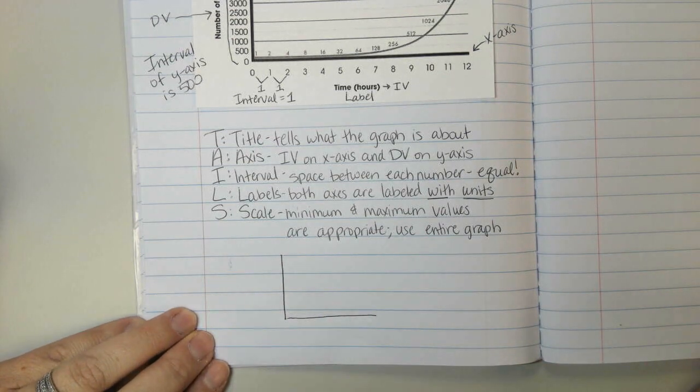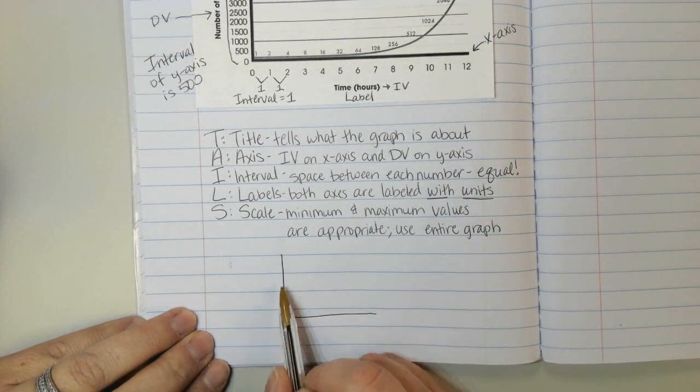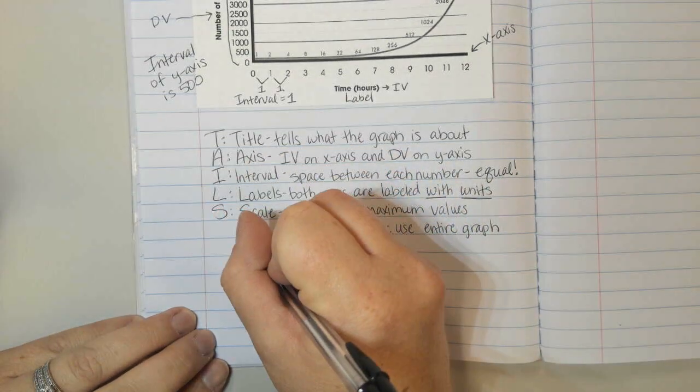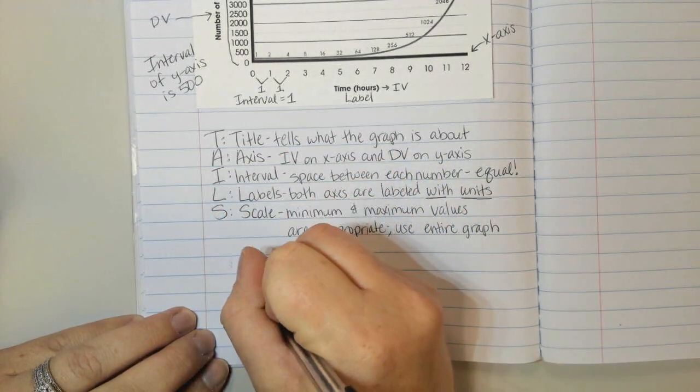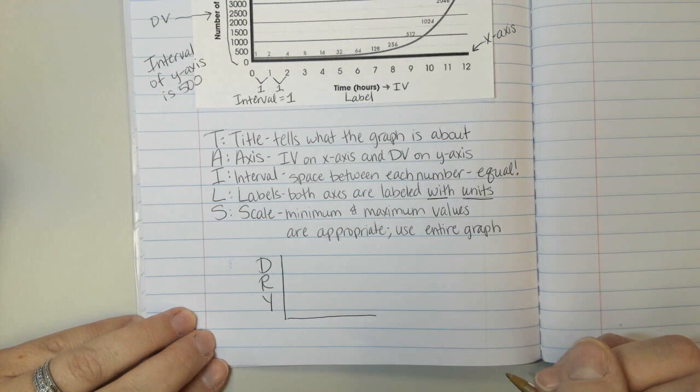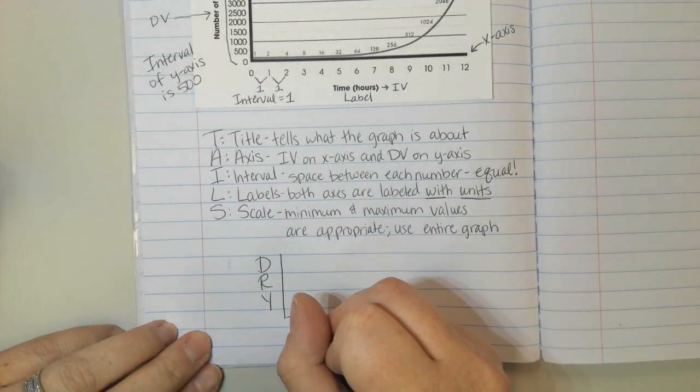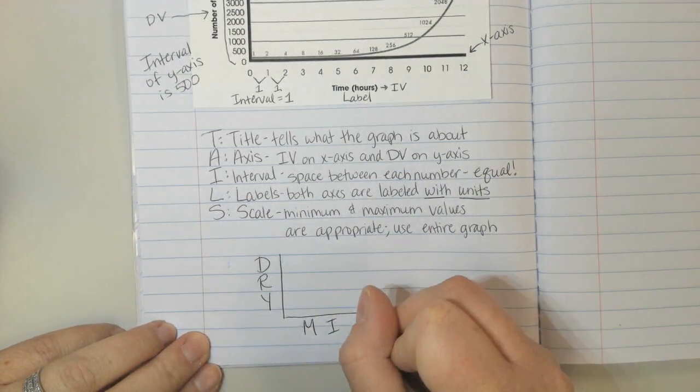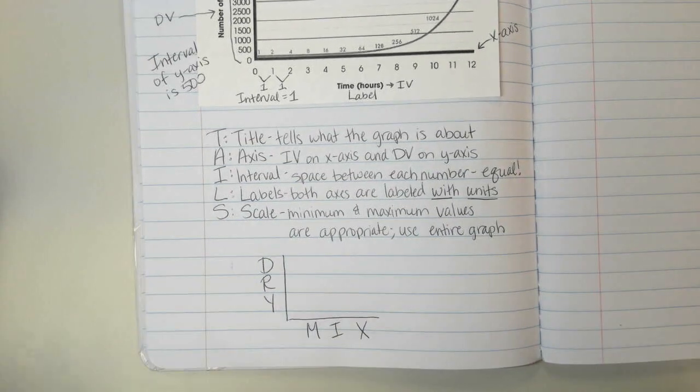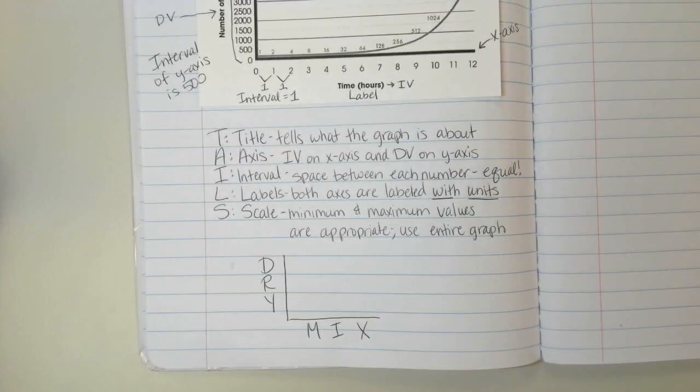There are two words we're going to use. Those are dry, mix. So down the y-axis on the side, we're going to write dry: D-R-Y. And across the bottom, we're going to write mix: M-I-X. And this will help us remember which variable goes on which axis.